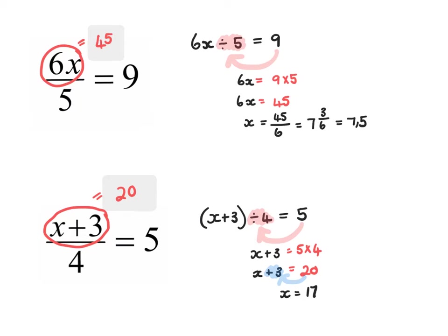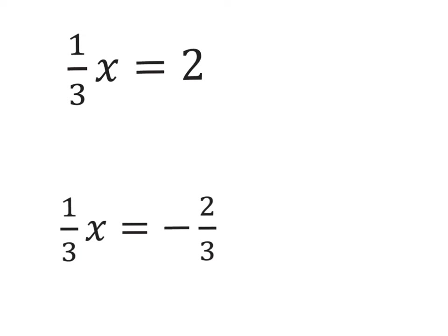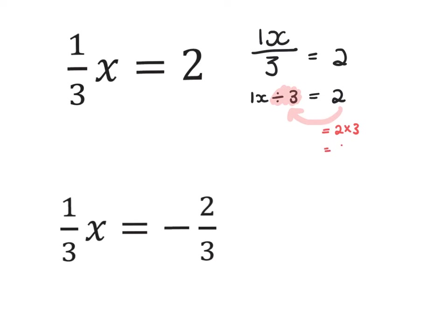Let's make this slightly more difficult. In these examples I have one-third x. If this looks confusing, you can rewrite it as 1x divided by 3 equals 2. If I divide by 3 working forwards, it means I multiply by 3 working backwards. So that gives me 2 multiplied by 3, which is 6. Therefore x equals 6. I can put a block over the numerator to check: is 6 over 3 equal to 2?